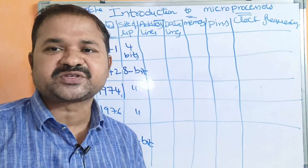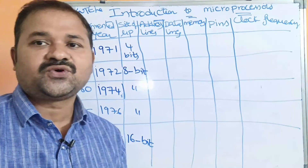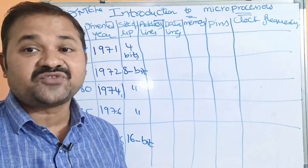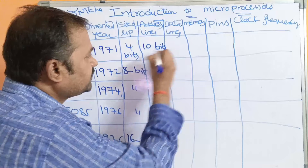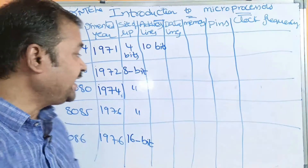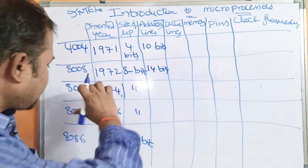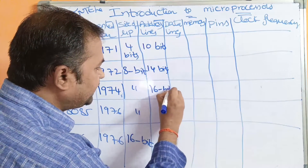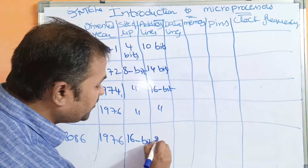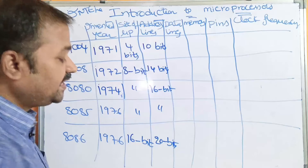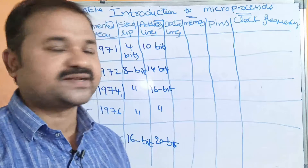Next is the address bus. The size of the address bus for 4004 is 10 bits, for 8008 it is 14 bits, for 8080 and 8085 it is 16 bits, and for 8086 it is 20 bits — using totally 20 address lines.